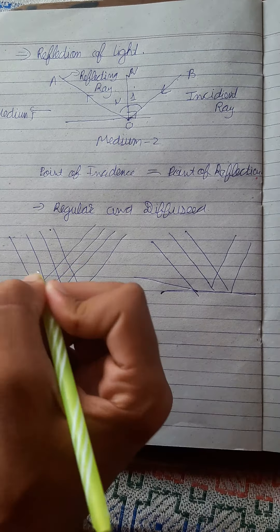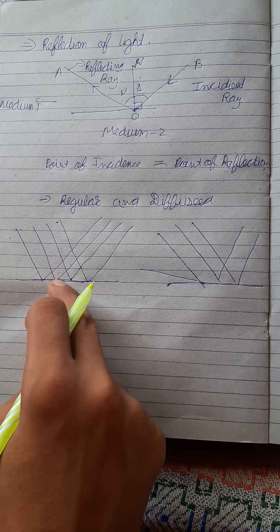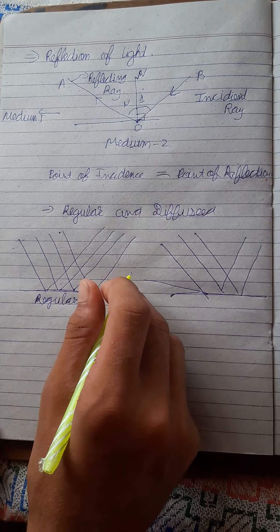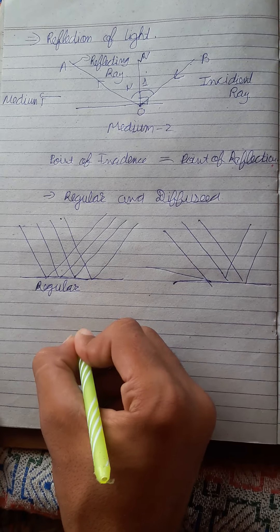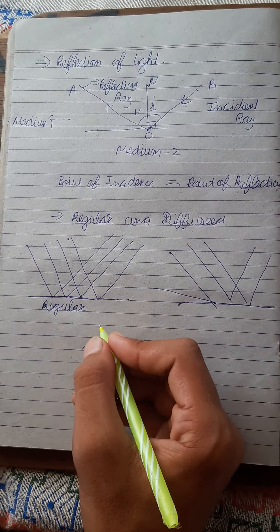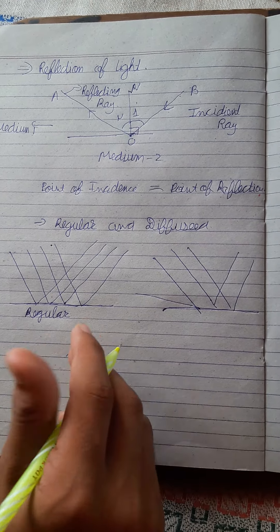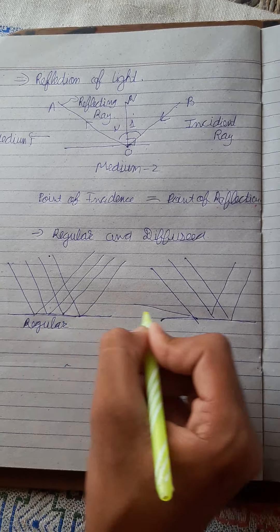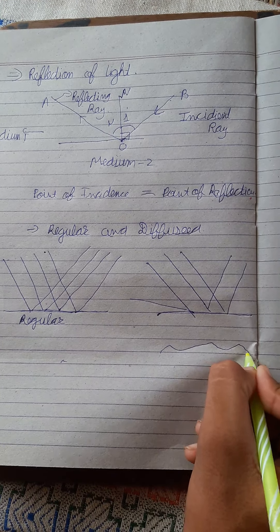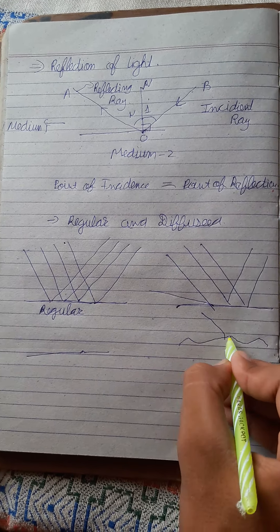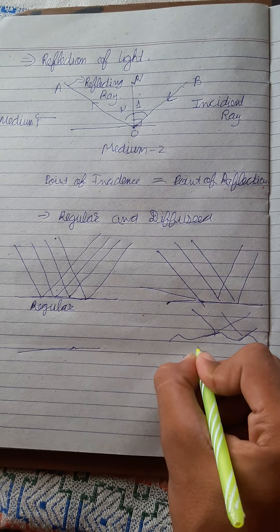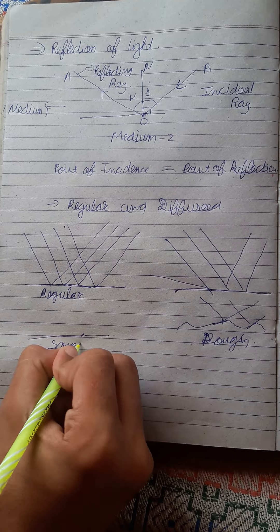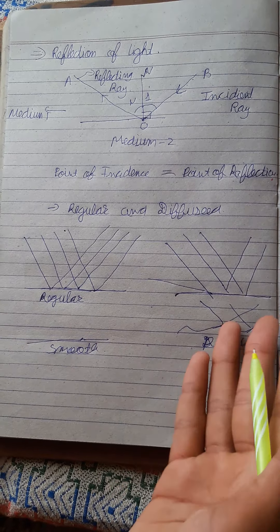Why do regular and diffused reflection occur? In regular reflection, when you see the surface at its core, it is very smooth — at a microscopic level it has very small differences in height. This forms a smooth surface. In diffused reflection, there are larger bumps, valleys, and mountains on the surface, so light reflecting hits them at different angles and goes in different directions. This is caused by a rough surface.